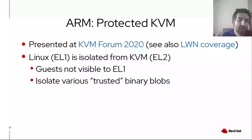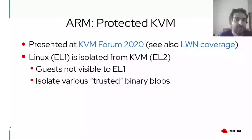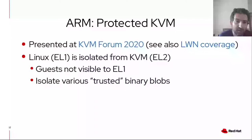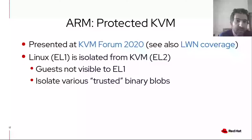On the topic of ARM, the most interesting feature is probably protected KVM. This was presented last year at KVM Forum by Will Deacon and covered on LWN.net. Around ARMv8.1, the virtualization host extensions were added to optimize KVM and other hypervisors that are part of an OS kernel. However, protected KVM does not use the virtualization host extensions, and instead separates the hypervisor running at exception level 2 from the host kernel running at exception level 1. The host Linux kernel is then isolated from the hypervisor, and guests are not visible to the host kernel at all.